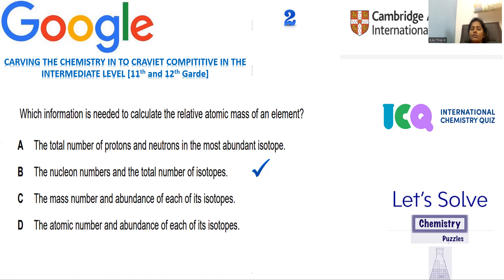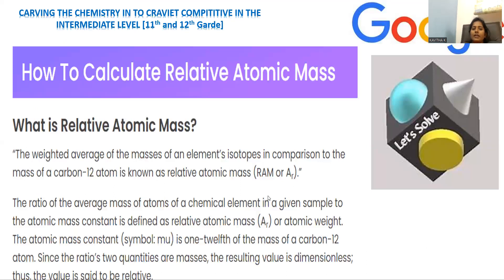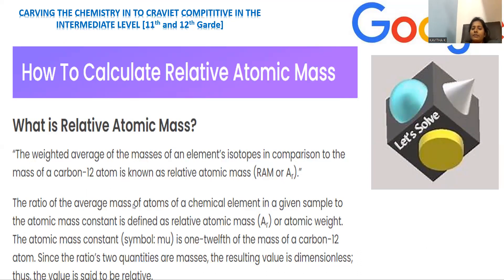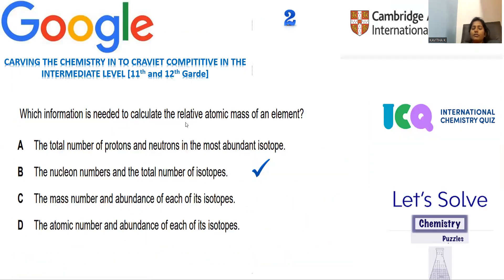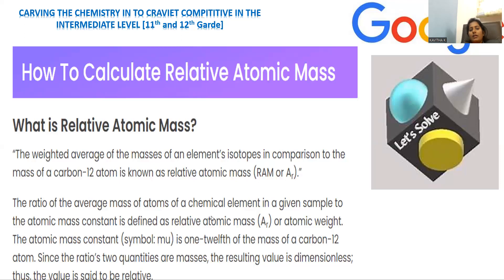This is the way relative atomic mass can be calculated. The weight average of masses of the element's isotopes in comparison to the mass of carbon-12 is known as relative atomic mass. We compare with the reference compound carbon-12. The average masses of the isotopes are taken individually and compared with the carbon-12 isotope — that is why it is called relative. The nuclear number and the total number of isotopes are taken into consideration, which is given in option number B.